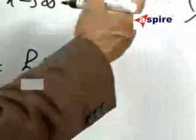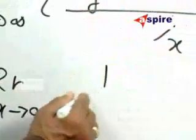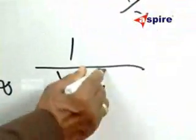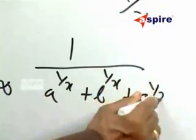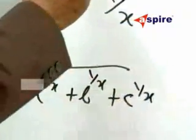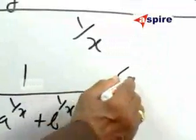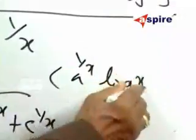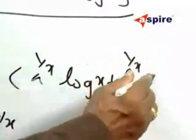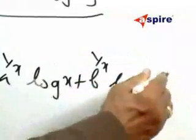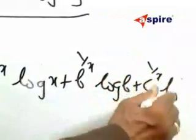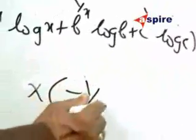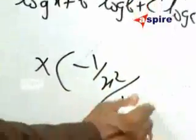Then I will be getting: 1 by A to the power 1 by X plus B to the power 1 by X plus C to the power 1 by X, into A to the power 1 by X into log A plus B to the power 1 by X into log B plus C to the power 1 by X into log C, times minus 1 by X squared, divided by minus 1 by X squared.